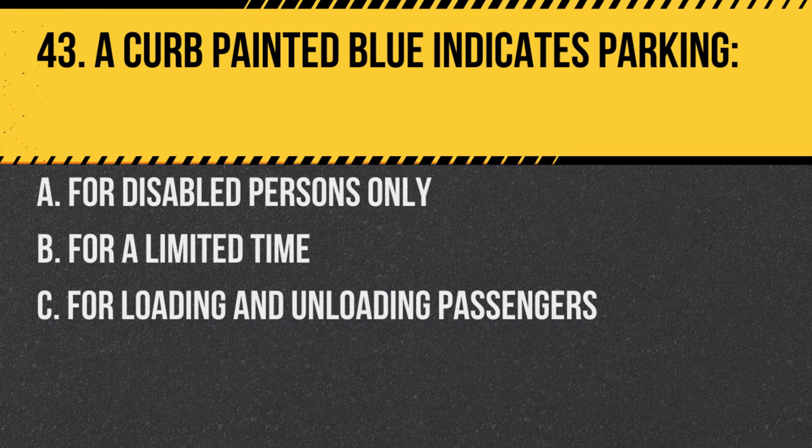Question 43. A curb painted blue indicates parking: a. For disabled persons only. b. For a limited time. c. For loading and unloading passengers. Answer: a. For disabled persons only. Blue curb markings are reserved for disabled parking.